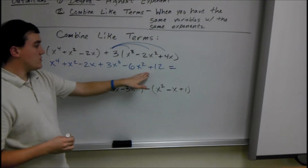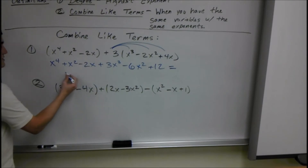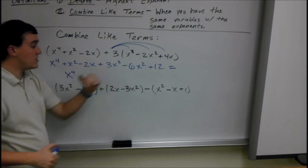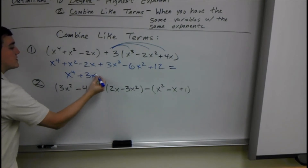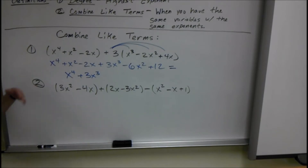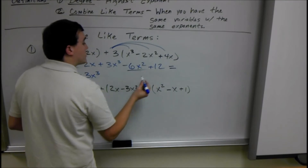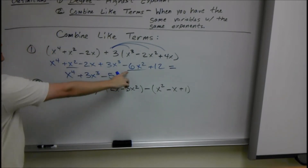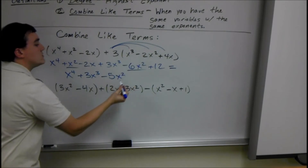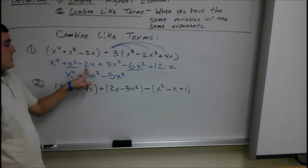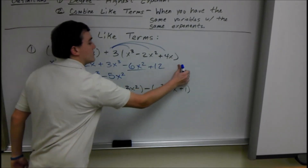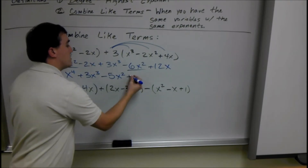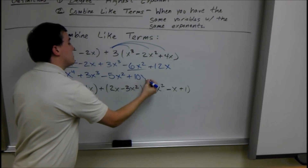We look at our highest degree first. Here we have x to the fourth, so that's just going to stay x to the fourth since there are no other x to the fourth terms. Next we have x cubed and there are no other x cubed terms, so we have plus 3x cubed. Then we have all our x squared terms: x squared minus 6x squared is minus 5x squared. And then we have negative 2x plus 12x, which is plus 10x.